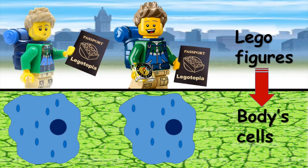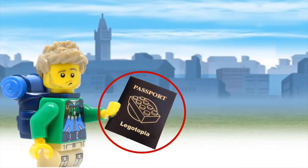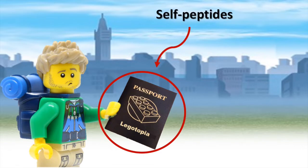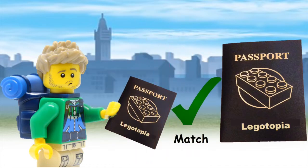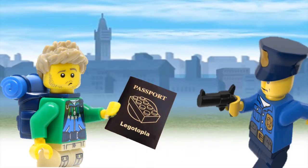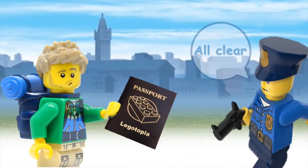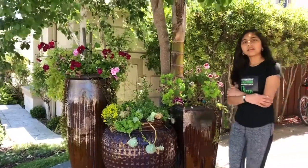Think about it like this. Pretend that these Lego figures are our body's cells and our body is a certain country, say Legotopia. Notice that each Lego figure is holding their country's passport, telling us where they are from. These passports are analogous to self-peptides. If the figure's passport is the same as that of Legotopia, then Legotopia's police forces — or the immune system — won't react to it.